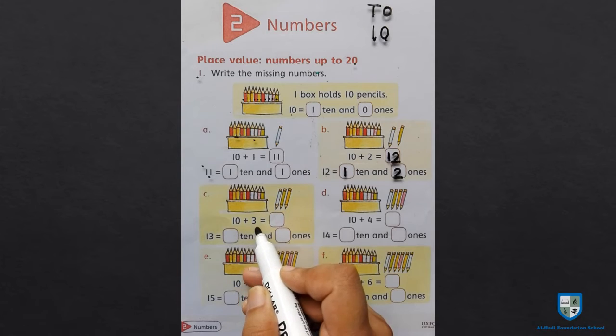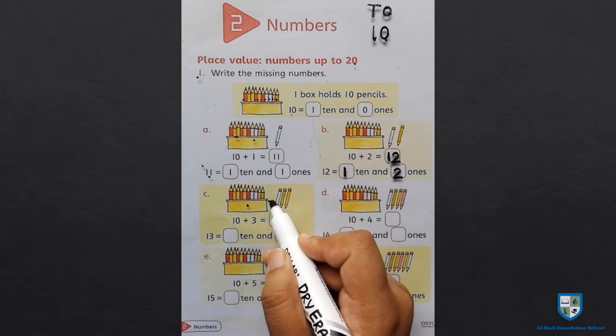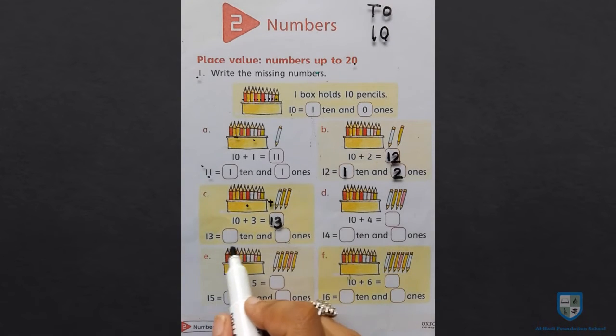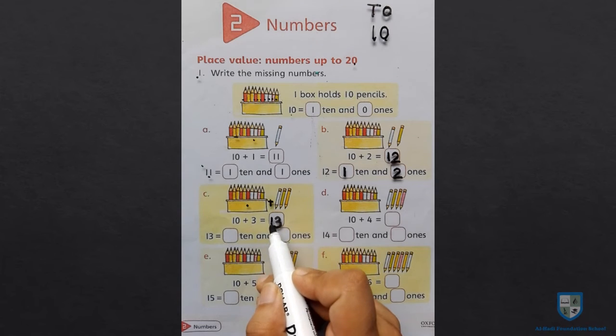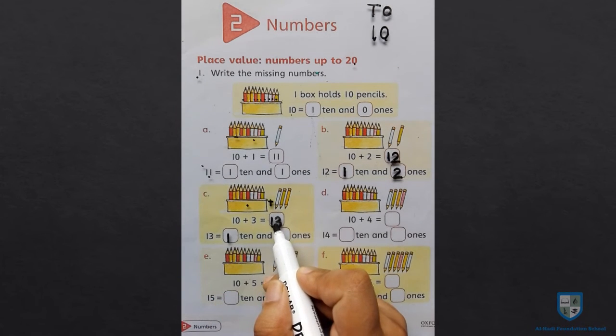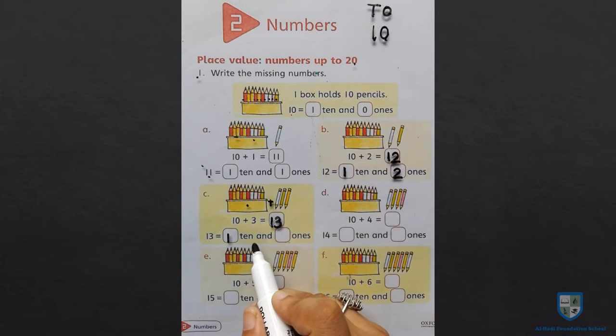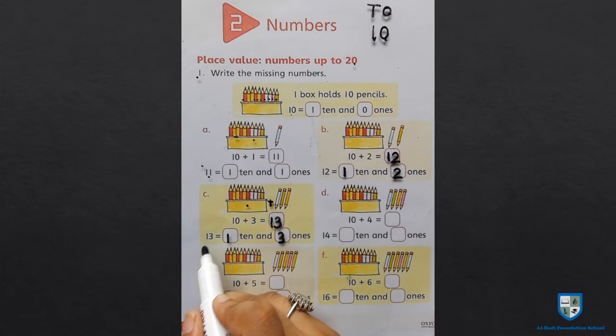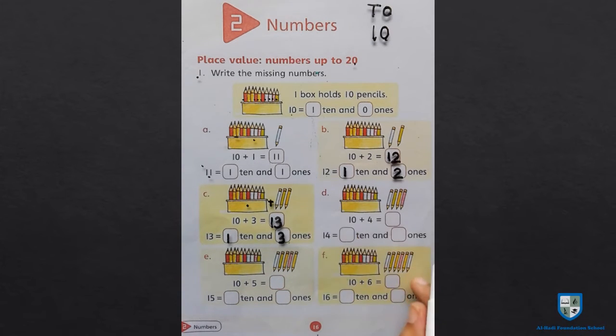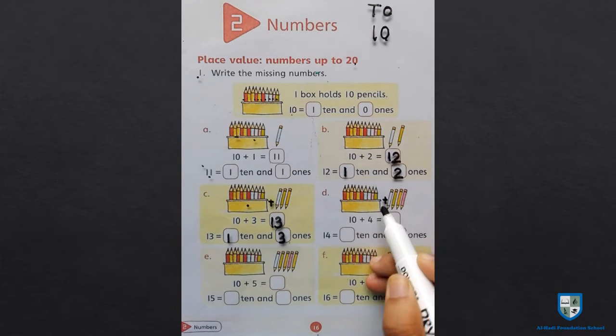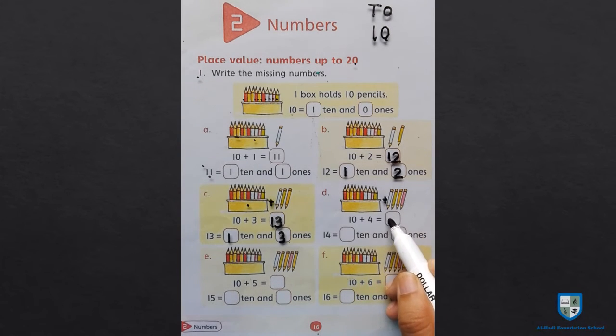10 plus 3. अब हमने 10 में 3 पैंसिल प्लास करनी है. 10 plus 3 is equal to 13. 13 में हमने 10s और 1s को लागू करना है. 1 ten and 3 ones is equal to 13. 10 plus 4. 10 में हमने 4 पैंसिल को प्लास करना है. 10 plus 4 is equal to 14. 1 ten and 4 ones is equal to 14.